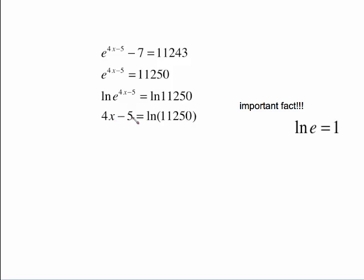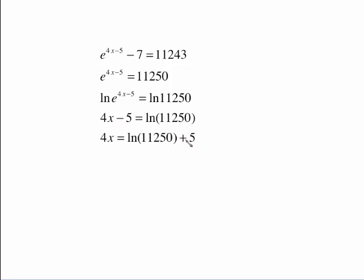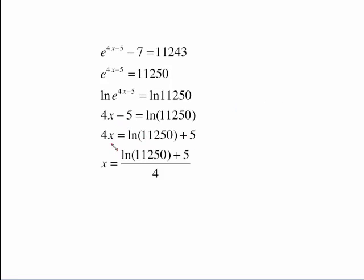Here's our ln of 11,250. Now this is a basic equation to solve. We've got to get this x alone. So we're going to add 5 to both sides. And then we're going to divide everything by 4.